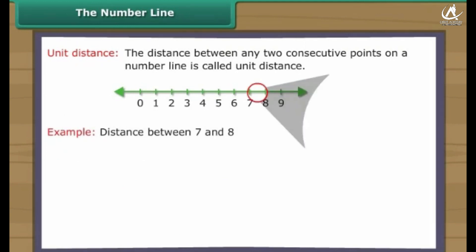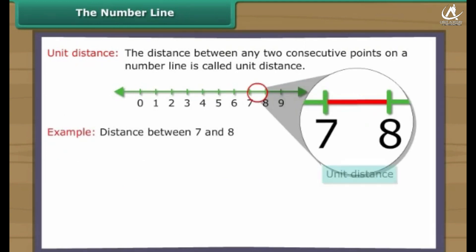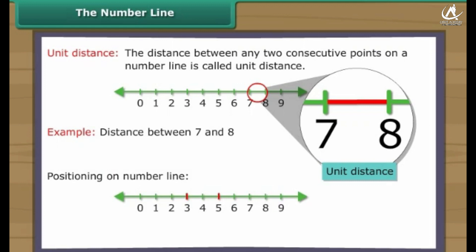The distance between any two consecutive points on a number line is called the unit distance. Out of two whole numbers, the greater number comes on the right of the other number on the number line.